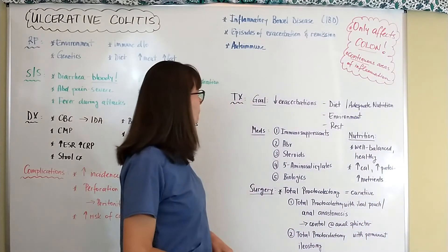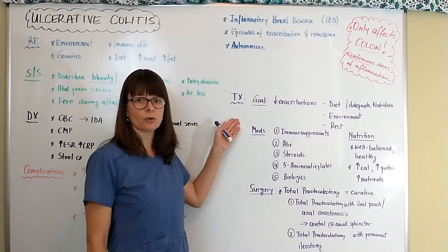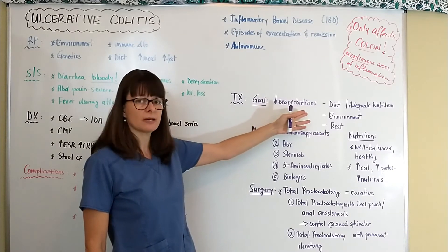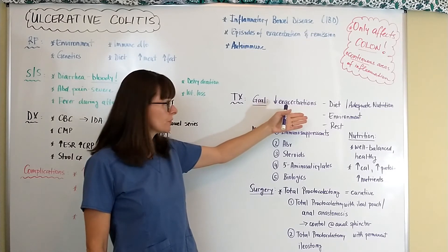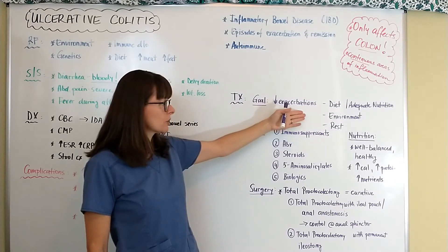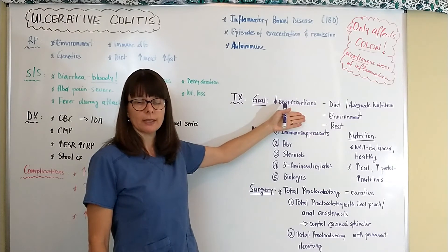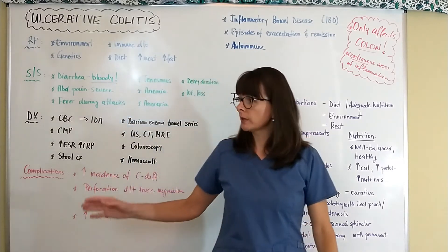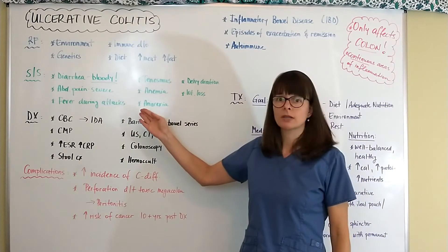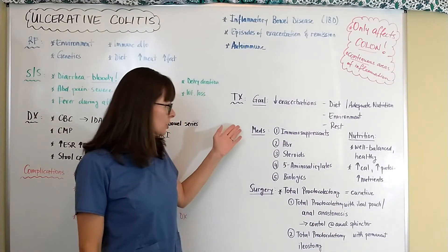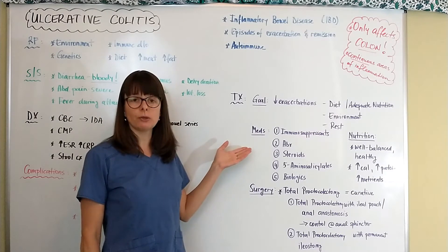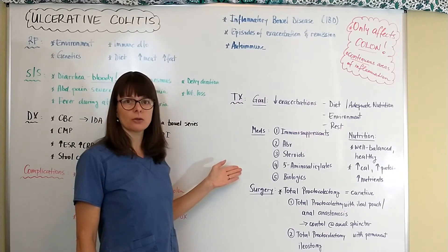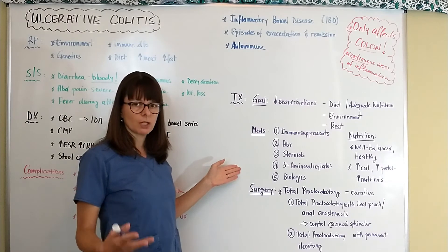In terms of treatment, the goal — just like in Crohn's disease — is to decrease episodes of exacerbation. Patients need an adequate diet rich in iron and high in nutrients. We need to decrease environmental pollutants and smoking. And we need to make sure the patient gets plenty of rest, because during exacerbation episodes this condition can be very fatiguing.